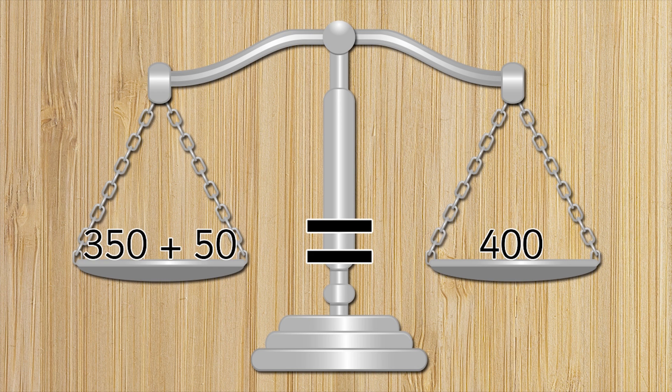Sometimes you will have a calculation before the equals sign, like this one, and after the equals sign, the answer. In this case, 400. 350 plus 50 equals 400.